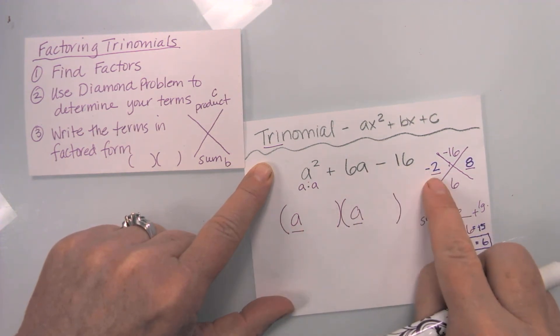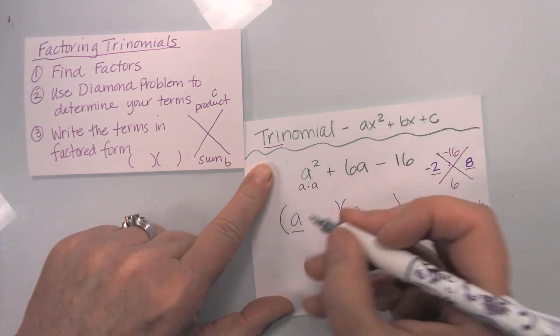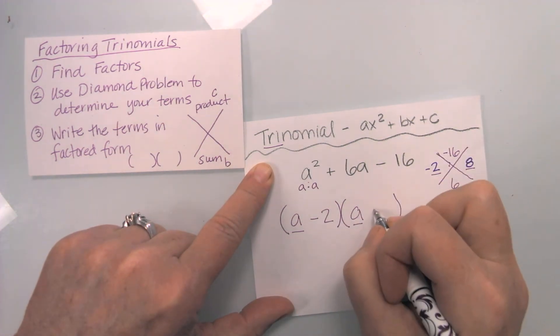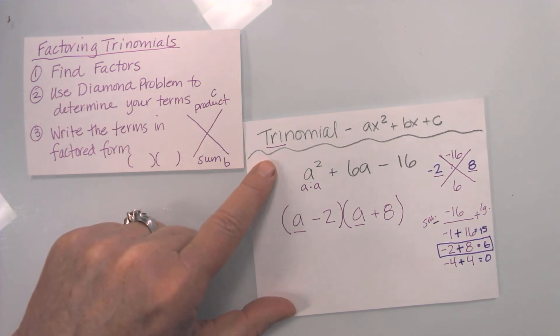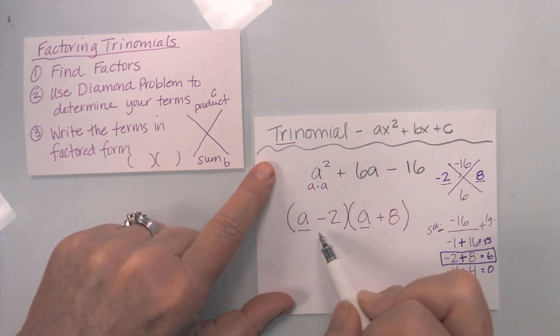Then I take a look at my terms. I have a minus two, and I have a positive eight. And so that is my trinomial in factored form.